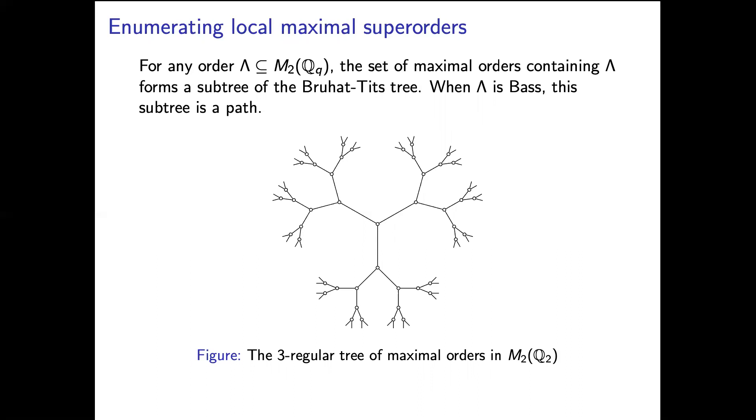So the idea here is we can use an algorithm of John Voight to compute one maximal order containing Λ and that gets us up into the subtree. And now we just need to explore the subtree of maximal orders containing Λ to find all of those orders.